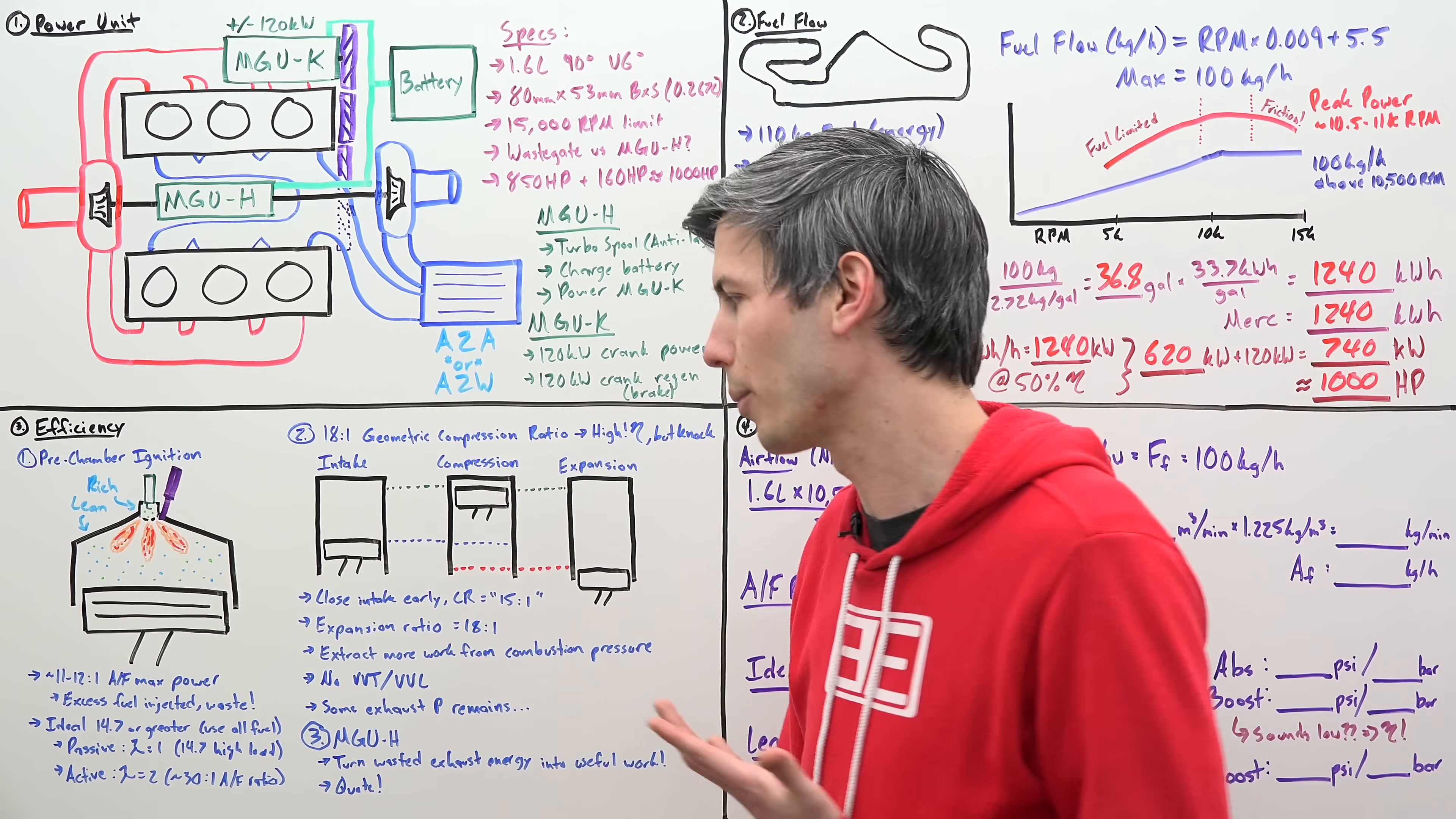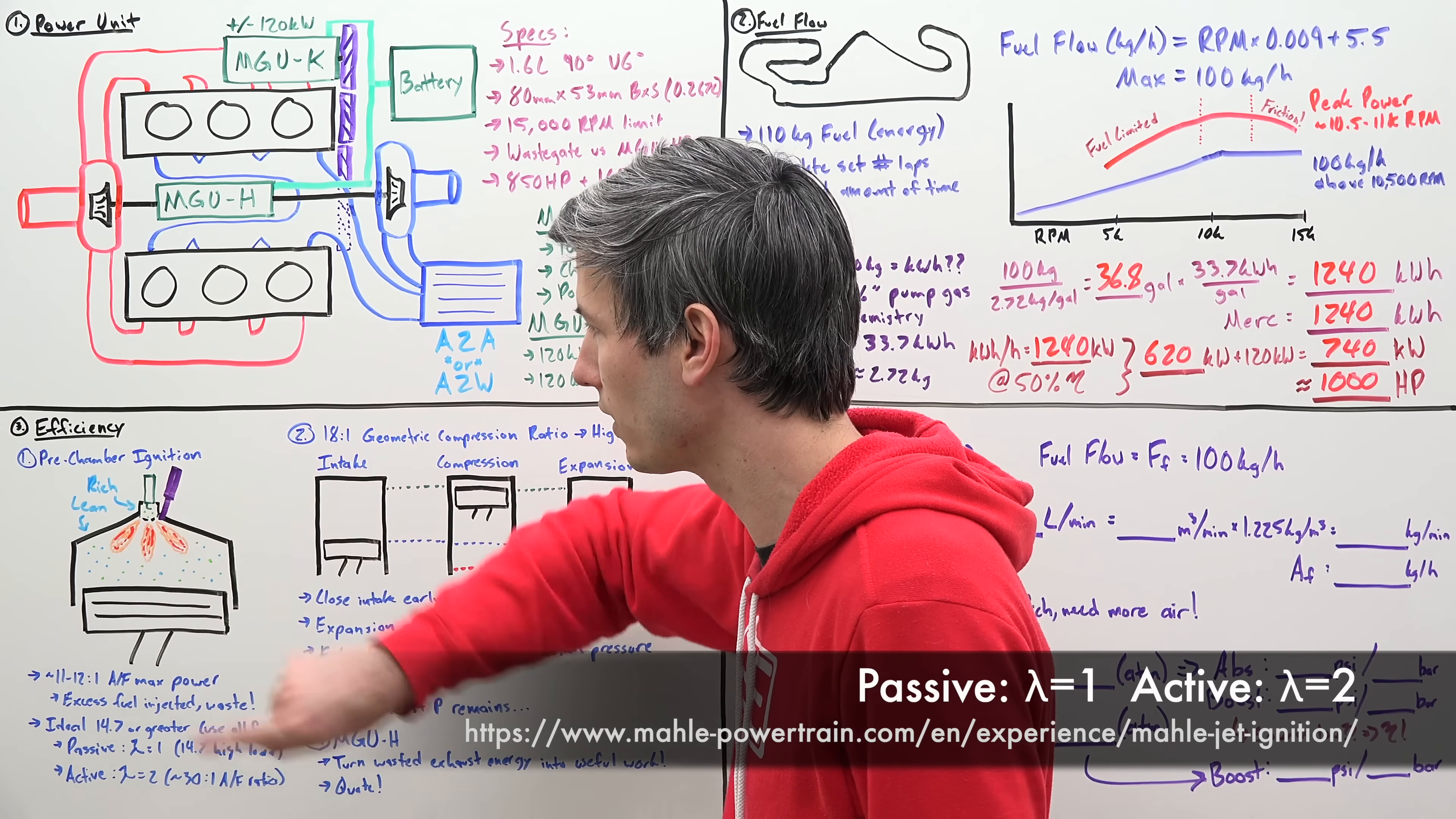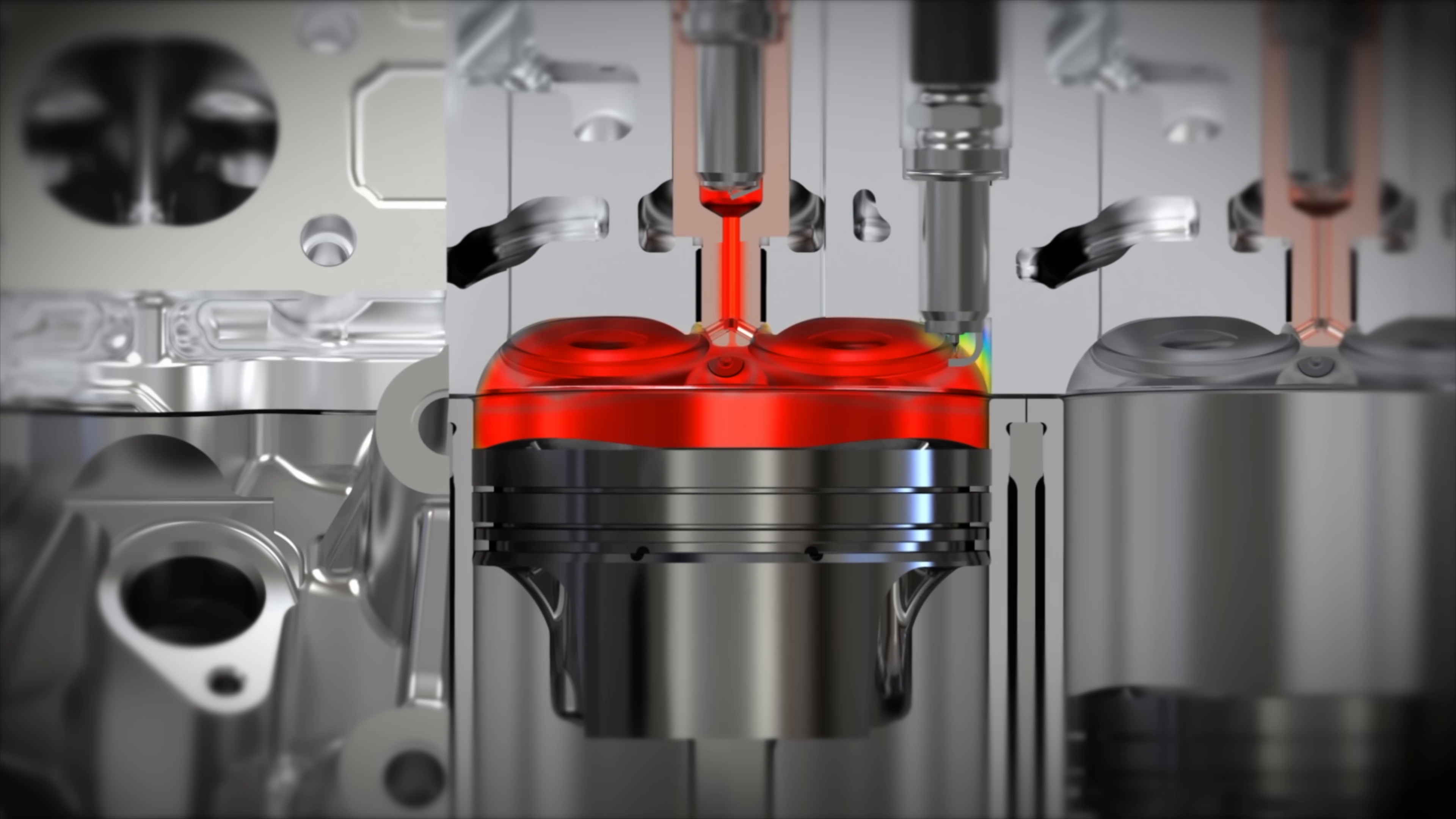Now, a company, MAHLE, which creates turbulent jet ignition engines, says, with a passive system like this, you can get away with high loads, with an air-fuel ratio of 14.7 to 1, with an active system, meaning you were actually to have another fuel injector within this tiny little pre-chamber. Well, then you could achieve air-fuel ratios of about 30 to 1, lambda 2. So, this, of course, is a passive system in Formula 1, but it means you can use leaner air-fuel ratios than we're used to in our combustion vehicles.